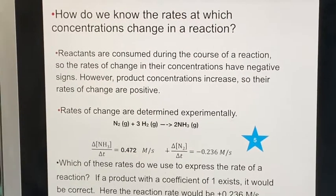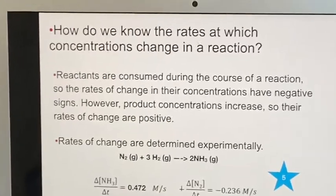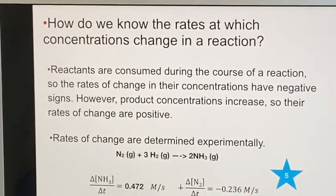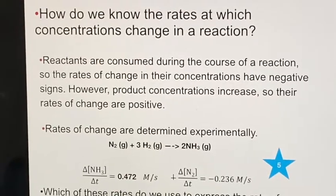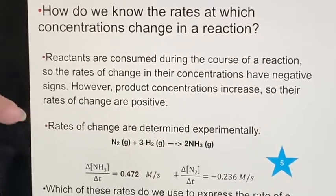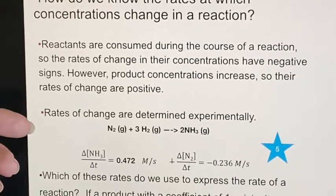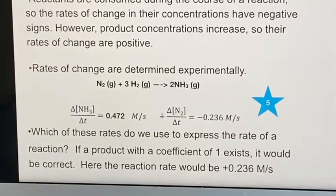So how are we going to figure this stuff out? The reactants we know are consumed, so they always have their rates of change with a negative sign. Products are all going to be increasing, so their rates of change are positive.